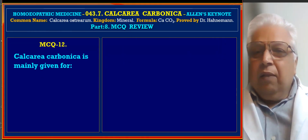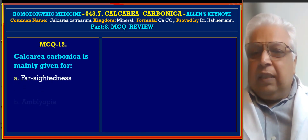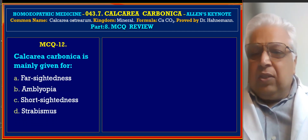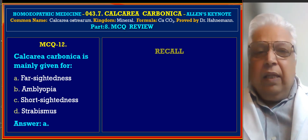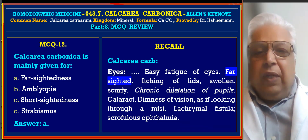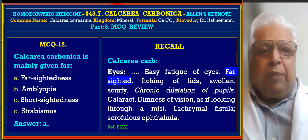MCQ 12: Calcarea Carbonica is mainly given for — A. Farsightedness, B. Amblyopia, C. Short-sightedness, D. Strabismus. Answer is A, farsightedness. Reference from Boericke's Materia Medica under Calcarea Carb, eyes section.